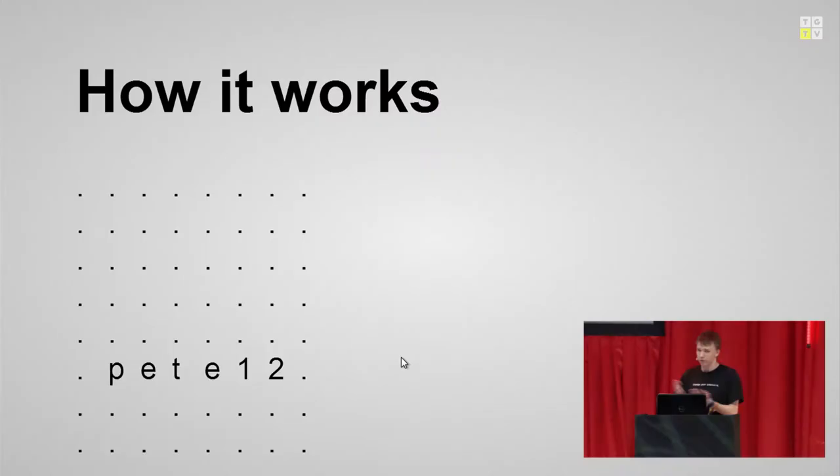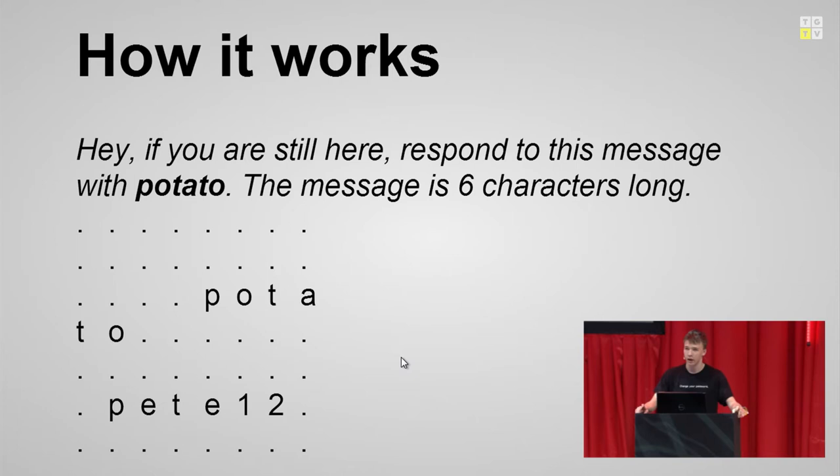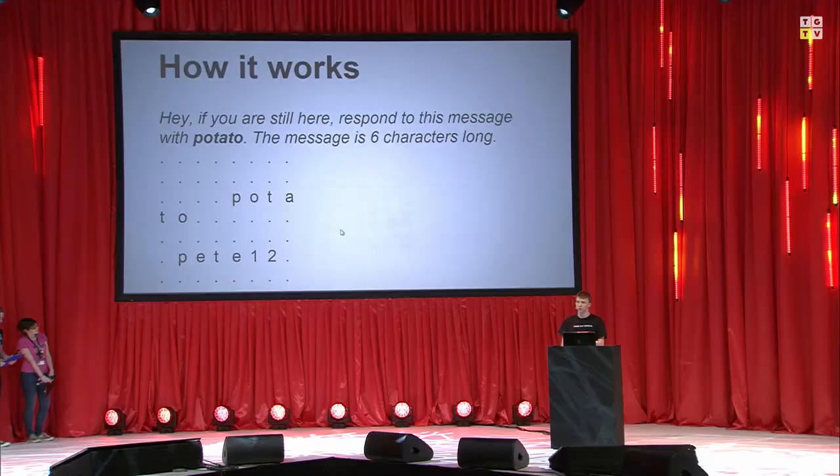In the memory there's random stuff represented by the dots, and a password for some program that the program might use in order to log into something. In this example, let's say P12. So the Heartbeat protocol, which is a part of HTTPS or TLS, works by you, the user, saying: are you still here? If you are still here, respond to me with this message. And then you send how long that message is and then the message itself. So for example, six characters: potato.